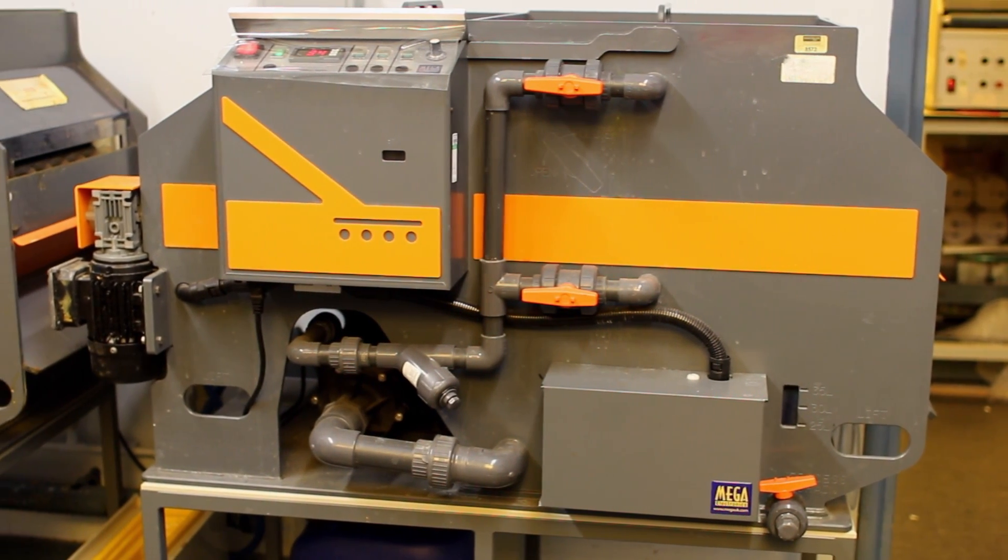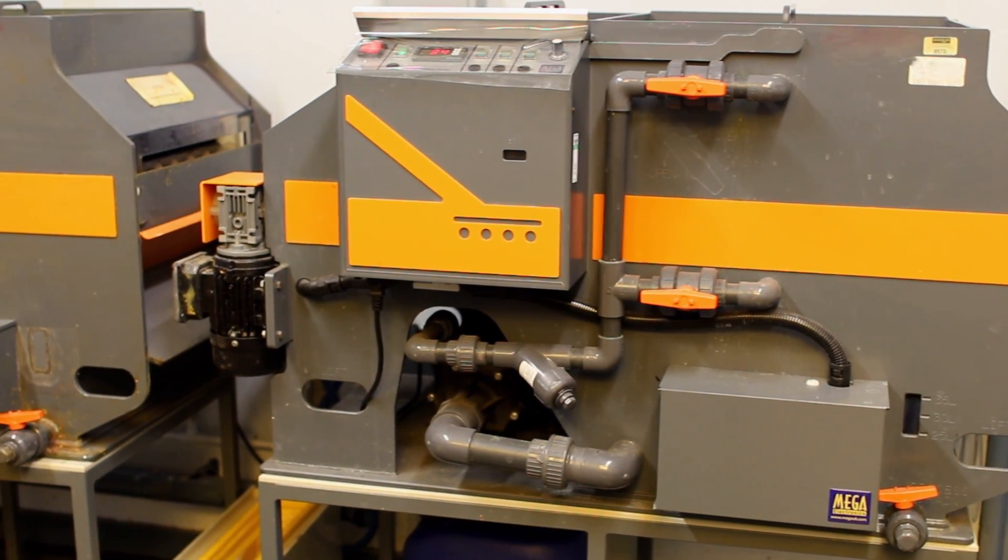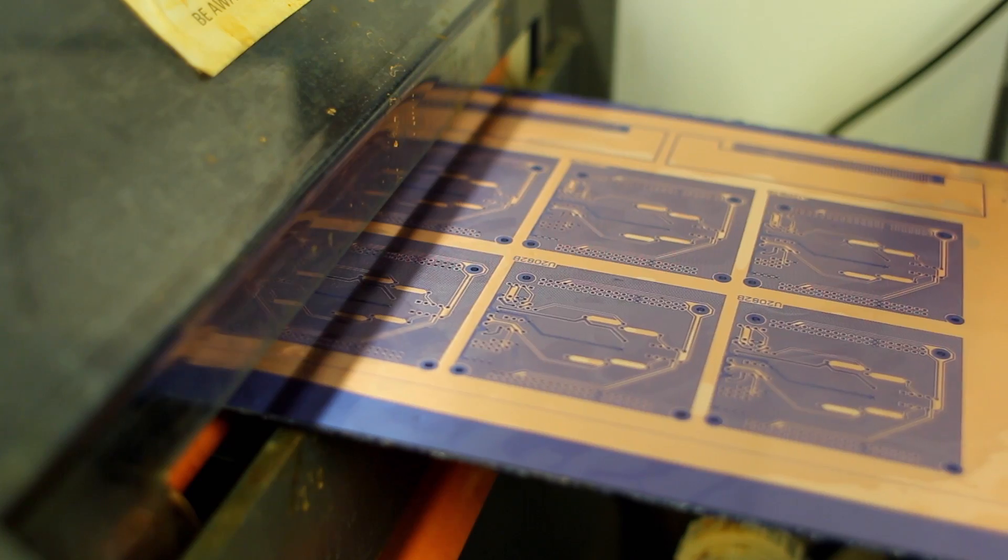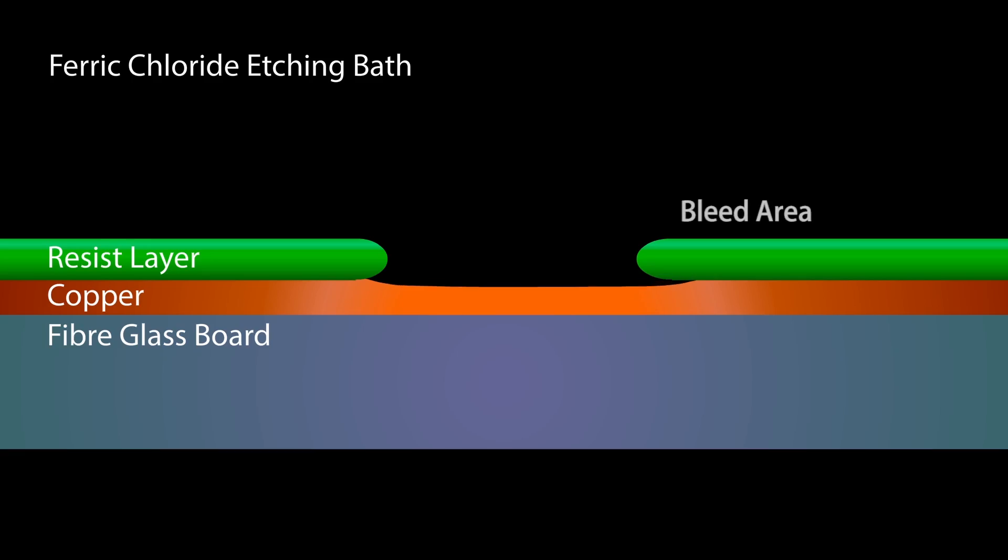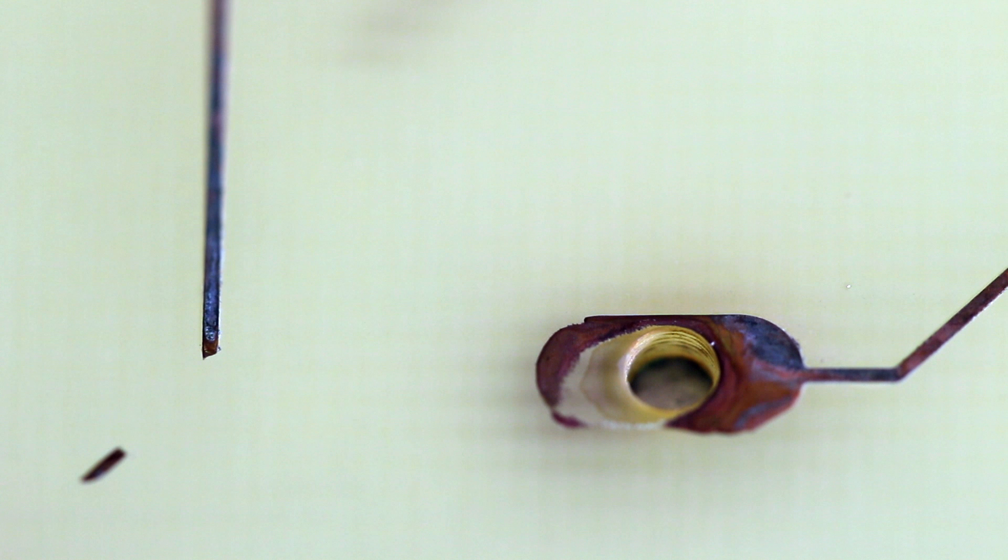The board is then put through a ferric chloride etching tank which chemically removes the copper not protected by the hardened resist film. There's the possibility of slight bleed of the acid under the protective film which can cause breaks in the tracks if they're beneath the minimum specified width. If the minimum pad size is not adhered to then there's a possibility that the drill holes will not be protected adequately and the through hole copper plating can be washed out in the etching process.